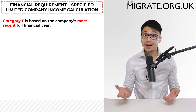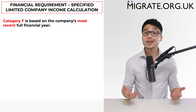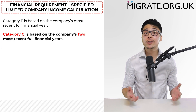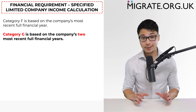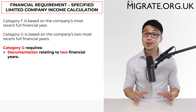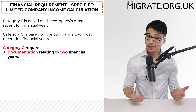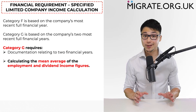I mentioned earlier that specified limited company income can also be included under category G. The difference between category F and category G is that while category F is based on the company's most recent full financial year, category G is based on the company's two most recent full financial years. So you would simply provide documentation relating to two financial years as opposed to one, as well as calculate the mean average of the employment and dividend income figures.